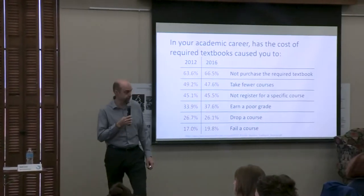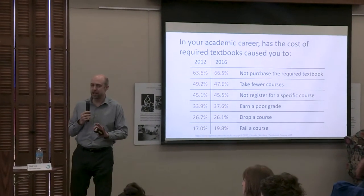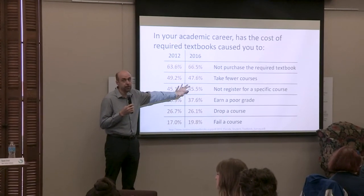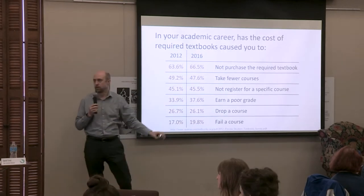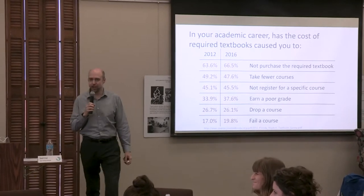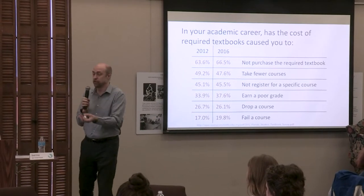I said I'd spend the first 20 minutes defining the problem, and the problem is now well defined. The question moving forward: how do we get these percentages down to zero? How do we not allow cost to impact students? What would be a solution, even if it seems unrealistic, that would solve this? Free textbooks would do it — because then you can't say you failed because of cost, since there was no cost.